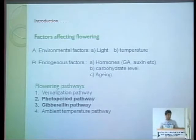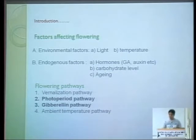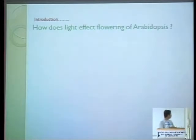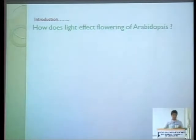There are various pathways of flowering in Arabidopsis and probably in many other plants, like the vernalization pathway, photoperiodic pathway, juvenile pathway, and ambient temperature pathway. These pathways interact with one another, sometimes inhibiting one another, and cause flowering in Arabidopsis and many other plants.